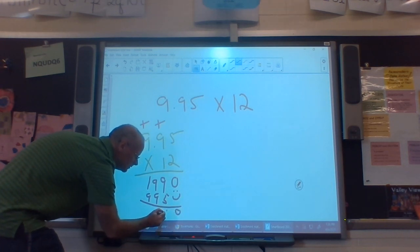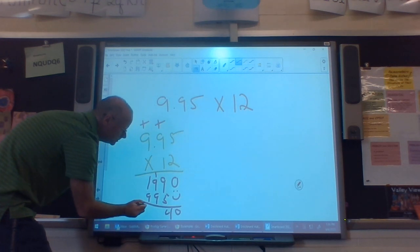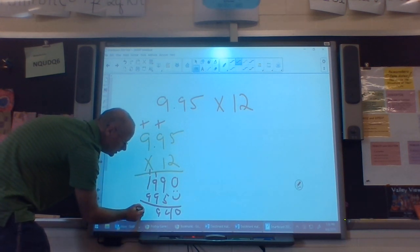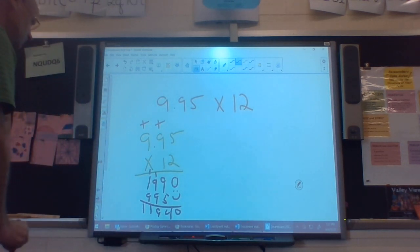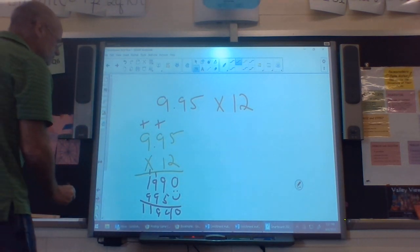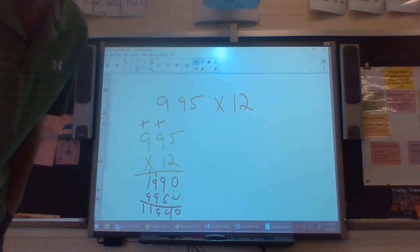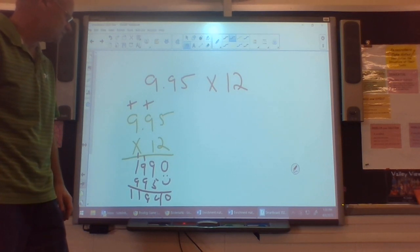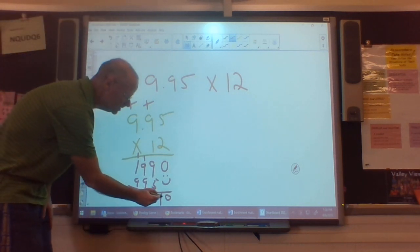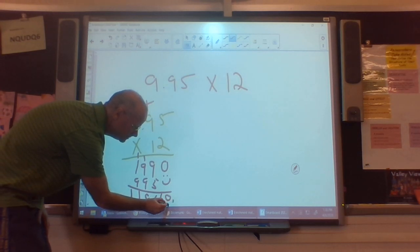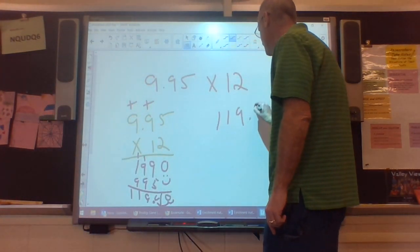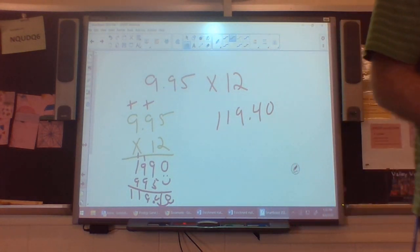I get 0, 4. Carry a 1. 19. Carry a 1. 11. My one problem I have left is there's a decimal point in here, and actually there are two spots past the decimal point. So the way that I get that in my answer is I'm going to come down here and move my decimal point over two spots. 1, 2. So if I get this problem my answer would be $119.40 if this was money.